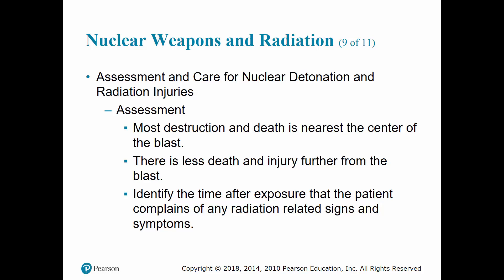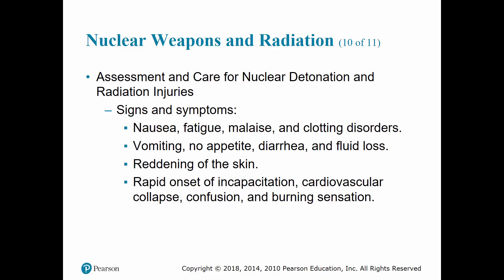The outer circle has more survivors, including patients exposed to the flash suffering from burns. When assessing these patients, determine how close they were and the time after exposure when they began showing signs and symptoms. Victims of a nuclear incident can include patients suffering thermal burns, blunt trauma, pressure injuries, and radiation exposure, with complaints of nausea, fatigue, and malaise.